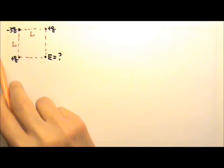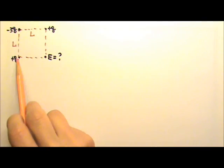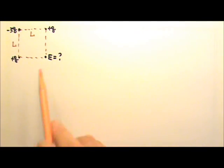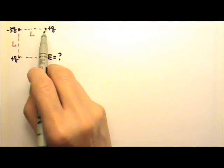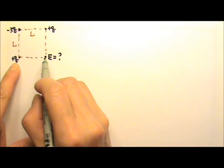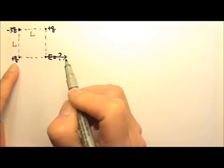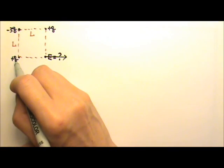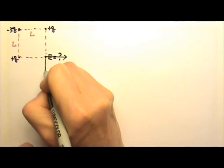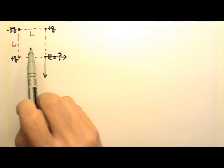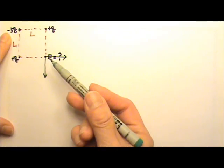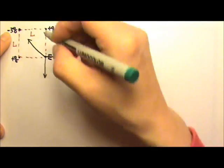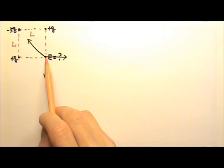We can also have a two-dimensional problem. For example, consider a square with three point charges at three corners, and we want to find the electric field at the fourth corner. There are three point charges producing field there. The field from each positive q points away from it, and because two of them carry equal charge at equal distance, those two fields have the same magnitude. The field from the negative charge points into it.